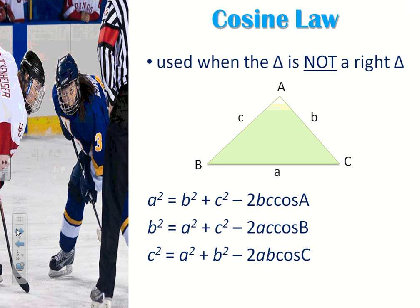We have three cosine laws. You don't have to memorize all three — they're actually all very similar. If I'm looking for A, then I start with A. For the second one, if I was looking for B, that's when I would start with B squared. So it changes up depending on what letter you're looking for. Now let's ignore the other two for now and just focus on the one at the top.